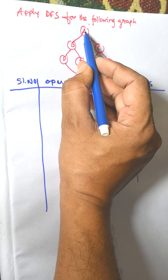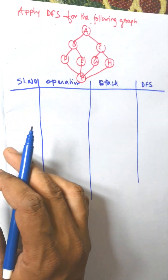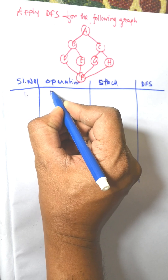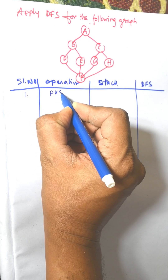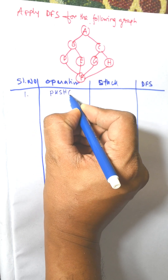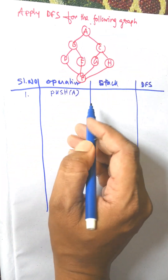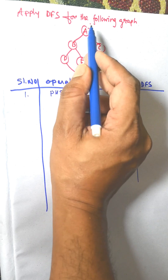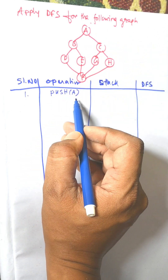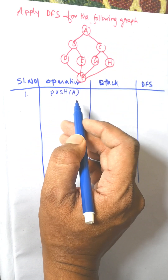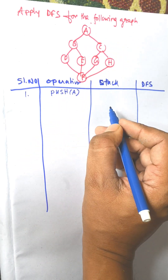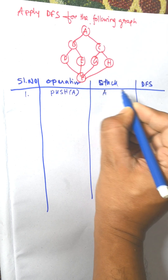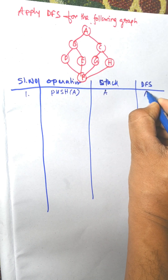A is the first node to be visited. From serial number 1, the first operation is a push operation — push A. A is the first according to alphabetical order, so we choose A as the starting node. Push A. The stack is A and the visited list is A.